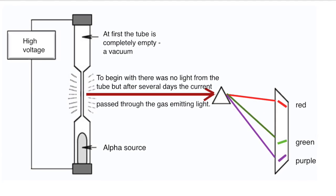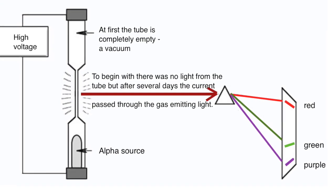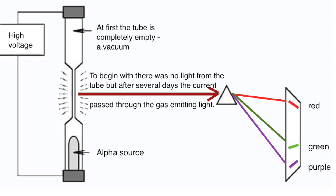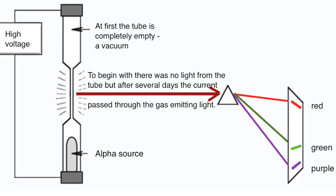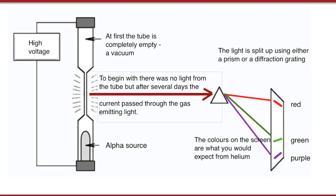Running this for over a week, he found at first there was no light at all coming from the tube. But after several days a current started to pass through the tube, and when that happened some light was emitted. That light could be analyzed using a diffraction grating, or more likely at that time a prism, refracted so that the color spectrum was split up and placed on a screen.